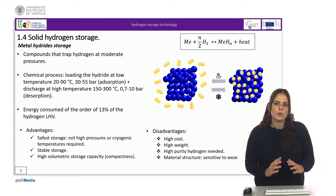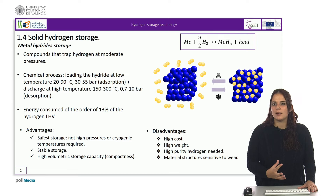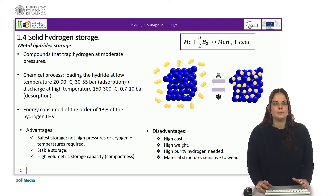Metal hydrides are intermetallic compounds that trap hydrogen at moderate pressures. This type of storage system is based on the principle that certain metals, under conditions of high pressure and moderate temperature, absorb hydrogen gas forming metal hydrides. When these metal hydrides are heated at low pressure, the hydrogen is released. Therefore, they have considerable potential for storing hydrogen cyclically.